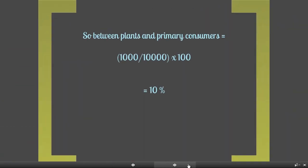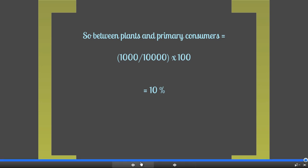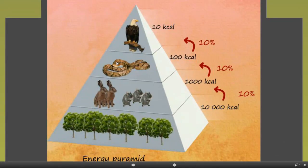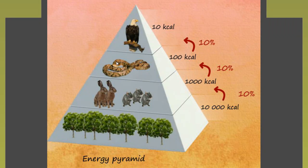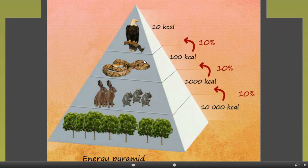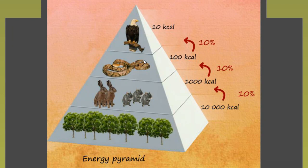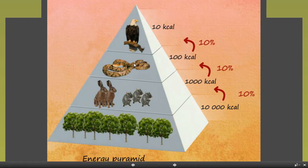You can see this written out: between the autotrophs and the primary consumer it works out at 10 percent. In fact, all of the values here are 10 percent. You know if you have done something wrong if your calculated energy transfer value is over 100 — you have probably got the numbers muddled up. The first number you put in the equation must always be smaller, because you cannot have more than 100 percent transfer. You cannot have all of the energy plus a bit more in the snake going into the bird.